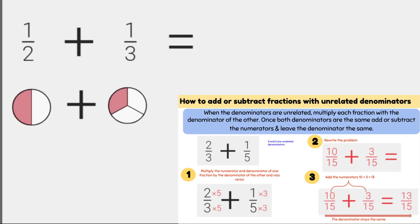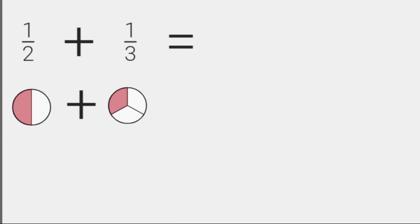So here's my first example: one-half plus one-third. There's nothing I can do to the two to make it three, because we want the same denominator on the bottom in order to solve this problem. And there's nothing I can do to the three to make it two.